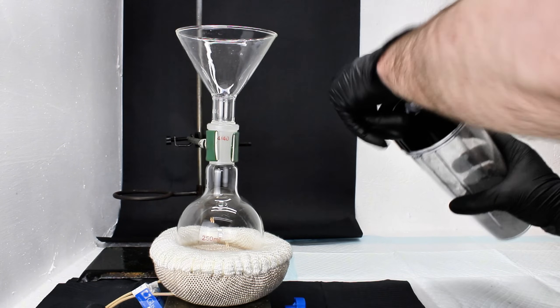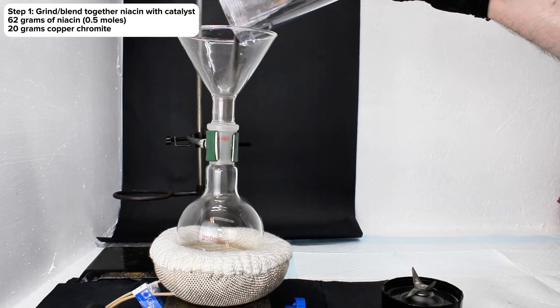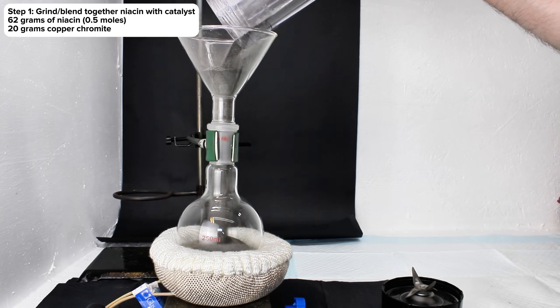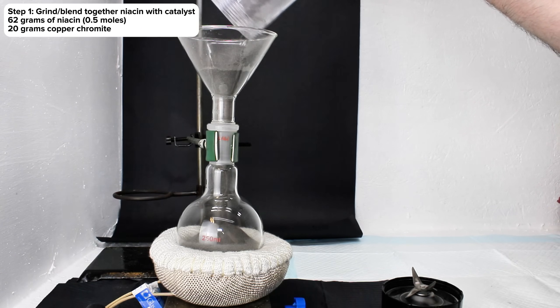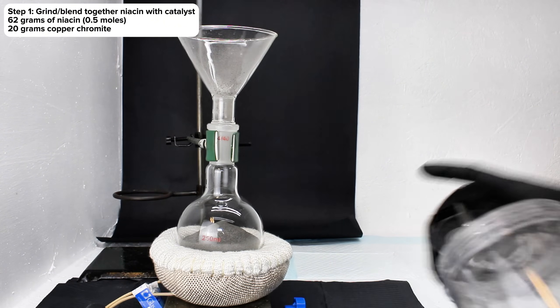Regardless, the first step in making pyridine is to grind together the niacin with your catalyst of choice. I used 62 grams of niacin and 20 grams of copper chromite, and to make sure they were thoroughly mixed, I decided to combine the two in a blender rather than a mortar.